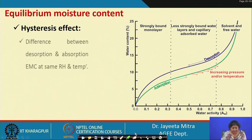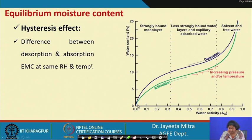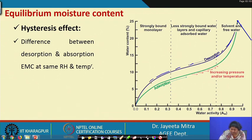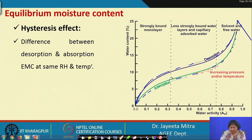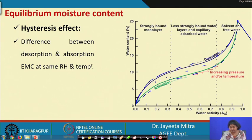Now we will see the hysteresis effect. When we perform a drying operation and decrease the moisture content of the product, then if that dried material is exposed to increasing water activity, it starts absorbing moisture again. However, the two curves — desorption and adsorption — will not be similar; there will be a deviation between them. This difference in the desorption and adsorption curves of equilibrium moisture content (moisture content versus relative humidity at a specific temperature) is called the hysteresis effect.